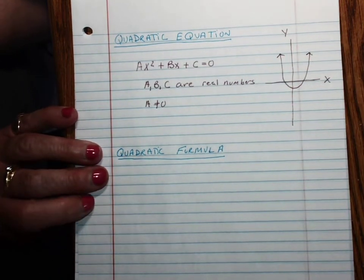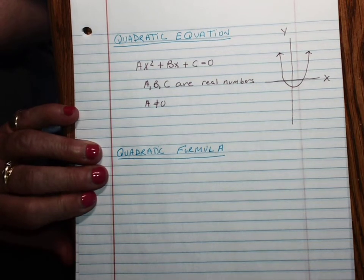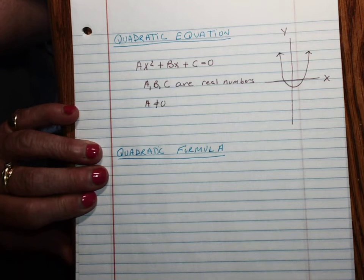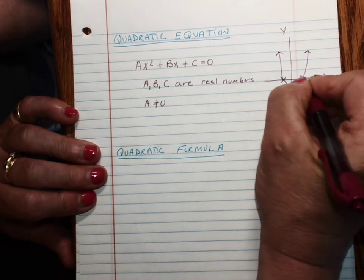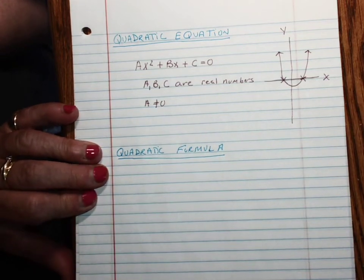When we were factoring, the solutions to the trinomials were the answers to a quadratic equation. And when we were graphing, the x-intercepts were the solutions to a quadratic equation.